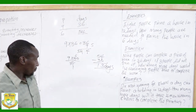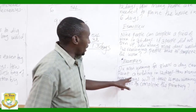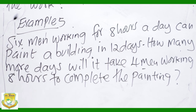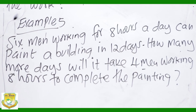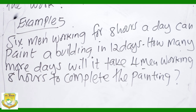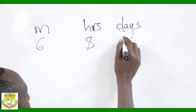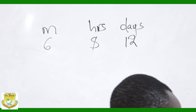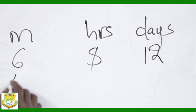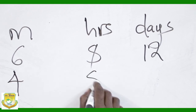Example 5: Six men working for 8 hours a day can paint a building in 12 days. How many more days will it take 4 men working for 8 hours a day to complete the painting? We are given men, hours, and days. Six men, 8 hours, 12 days. Since the number of hours remains the same for 4 men working 8 hours, we focus on men and days.